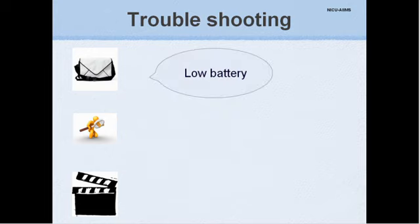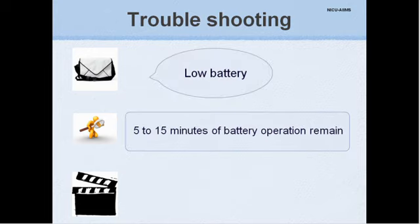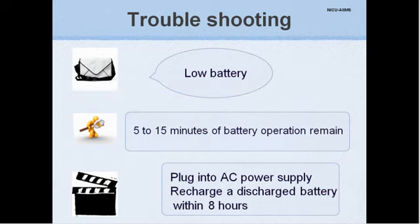A message of low battery indicates just 5 to 15 minutes of remaining battery power. Plug the oximeter into the AC power supply. To prevent permanent damage to the battery, recharge a discharged battery within 8 hours after a low battery message is displayed.